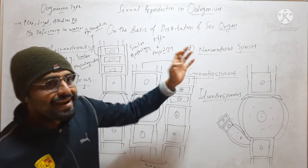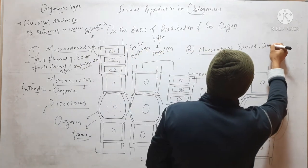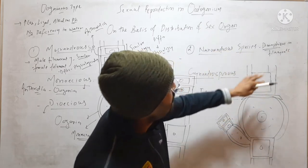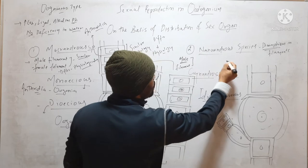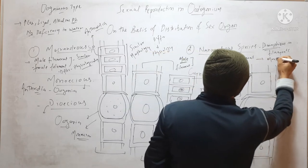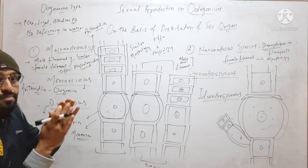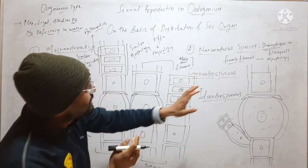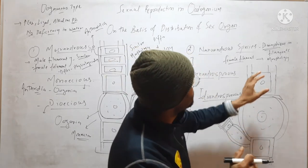Now coming to Nannandrous species. In the case of Nannandrous species, there is a dimorphism in filaments, meaning the male filament is morphologically different from the female filament. In Macroandrous species, male and female filaments were morphologically similar but differed physiologically. But in Nannandrous species, male and female filaments differ in morphology as well as physiology.